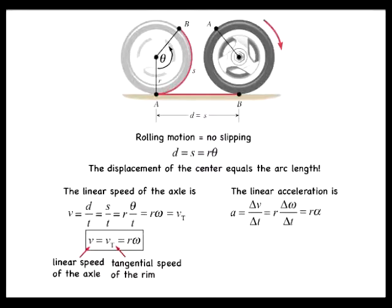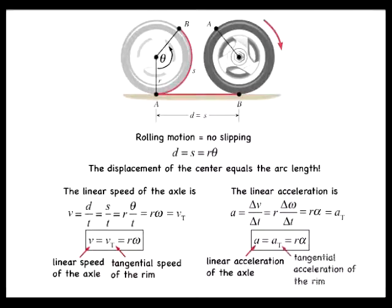which equals r times alpha, the angular acceleration, which is equal to at, or the tangential acceleration. Therefore the linear acceleration of the axle, a, is equal to the tangential acceleration of the outer edge of the tire.